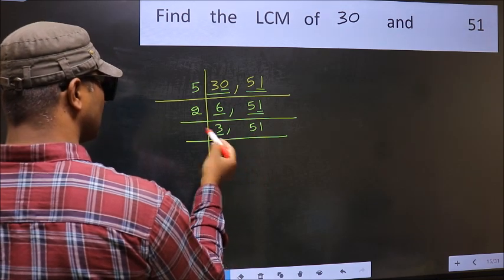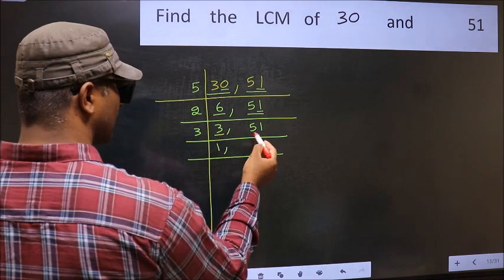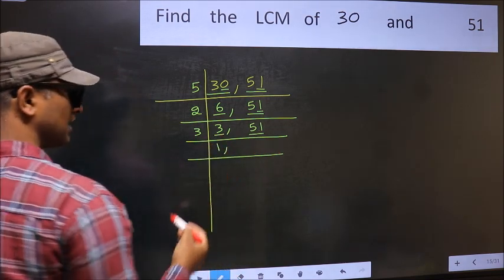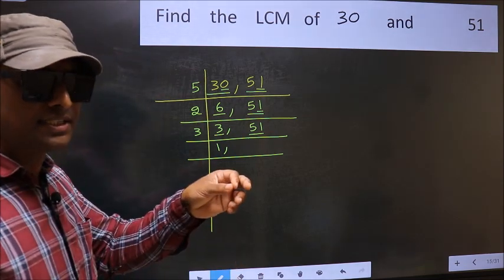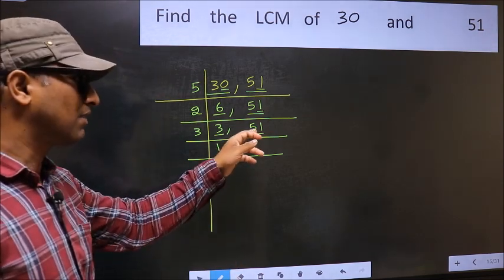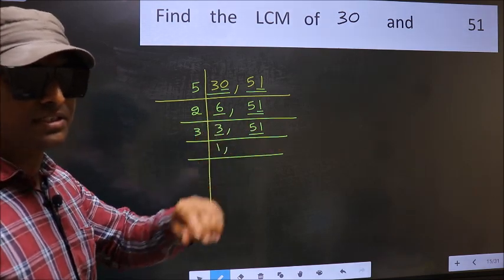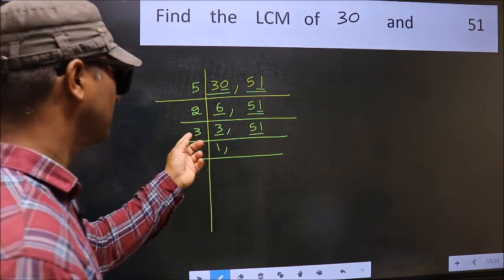Now here we have 3. 3 is a prime number, so 3 times 1 is 3. The other number, 51. To check whether 51 is divisible by 3 or not, add the digits: 5 plus 1, we get 6. And 6 is divisible by 3, so this number is also divisible by 3.